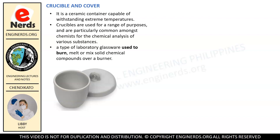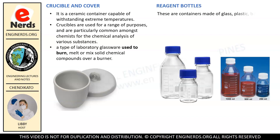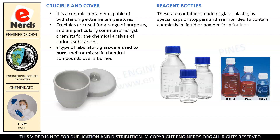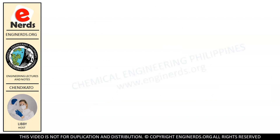Another container used in the laboratory is what we call reagent bottles. These are containers made of glass or plastic with special caps or stoppers, and are intended to contain chemicals in liquid or powder form for laboratories. They are stored in cabinets or on shelves. You have probably seen these already in the laboratory.